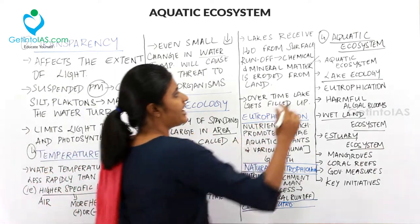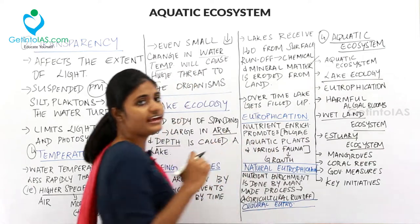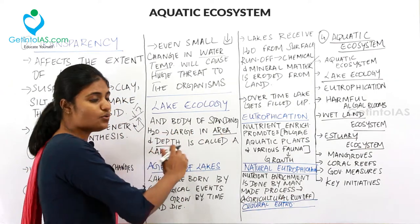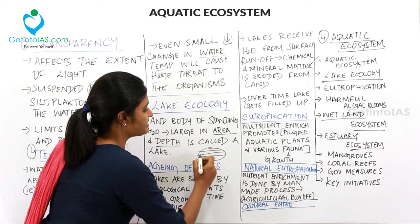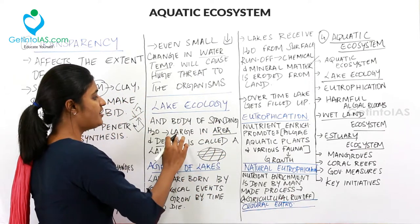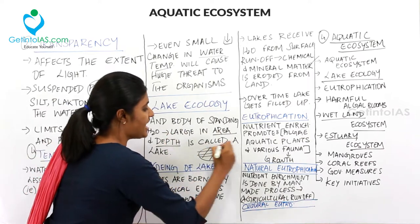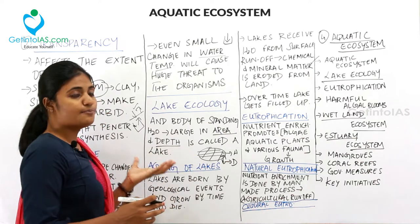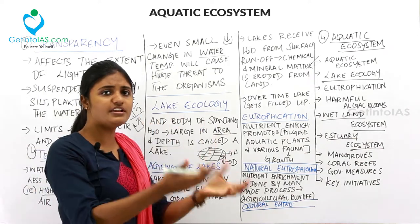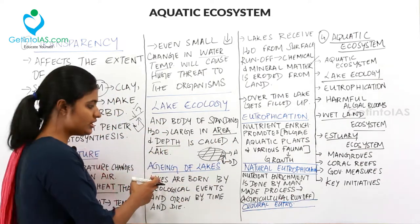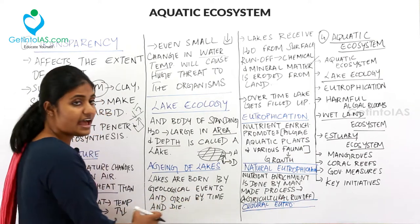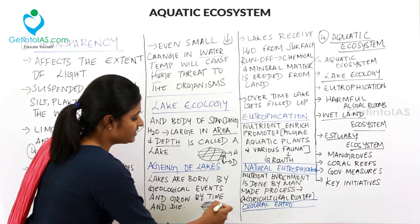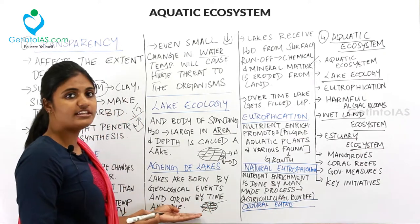Moving to lake ecology. A lake is any body of standing water — such as pools and ponds — with a large area and depth. The process of aging of a lake refers to how a lake is born and how it eventually dies. Lakes are born by geological events, grow over time, and then later die — this is called aging of lakes.